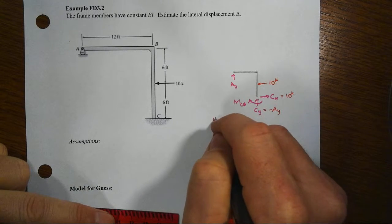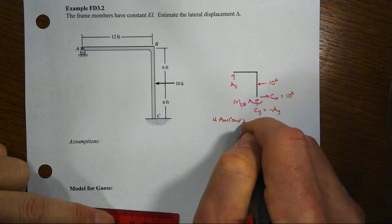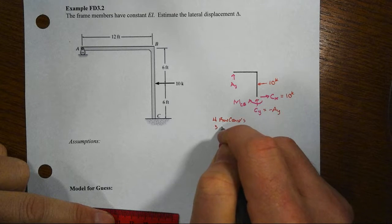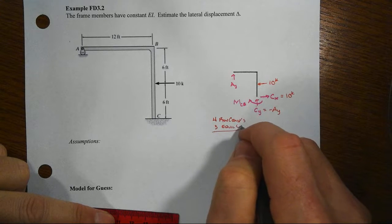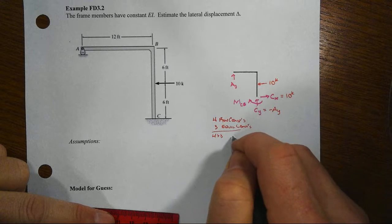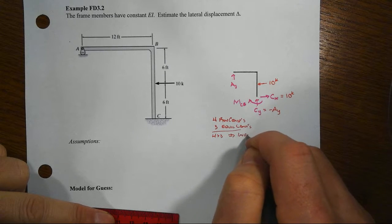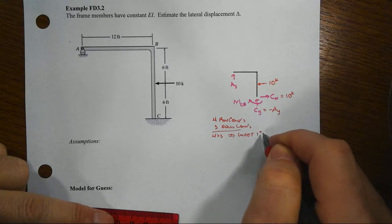But ultimately here, from a big picture standpoint, we've got four reaction components. We don't have any special conditions so we only have three conditions of equilibrium and that means that four being greater than three by one, this is indeterminate to the first degree statically.